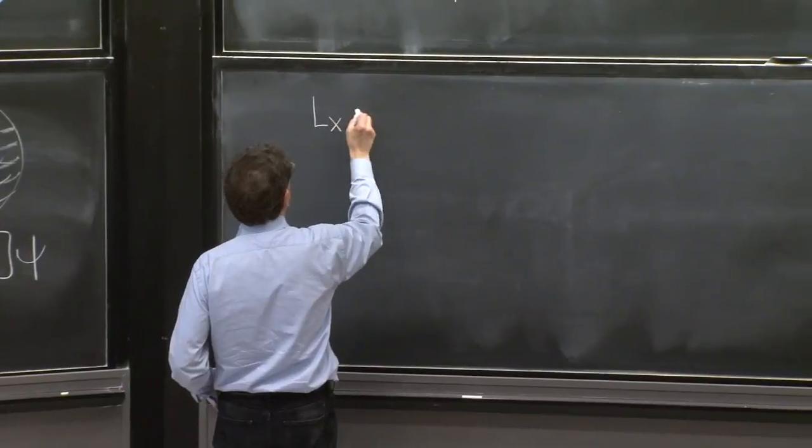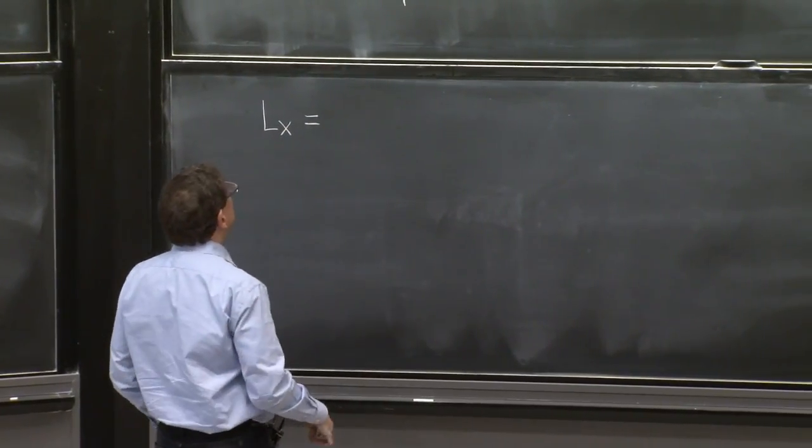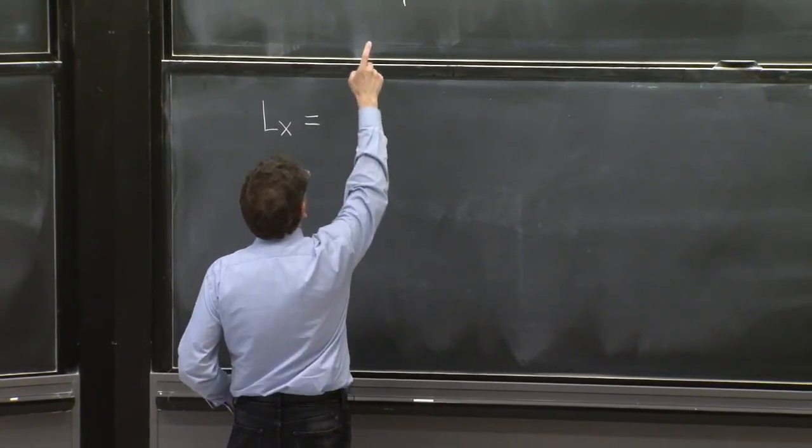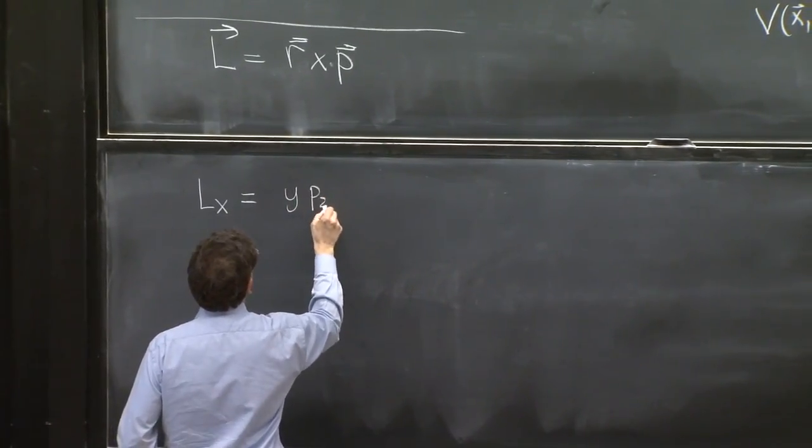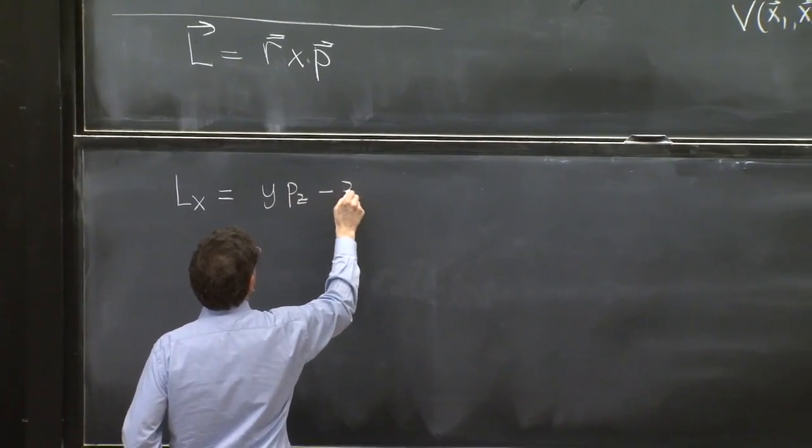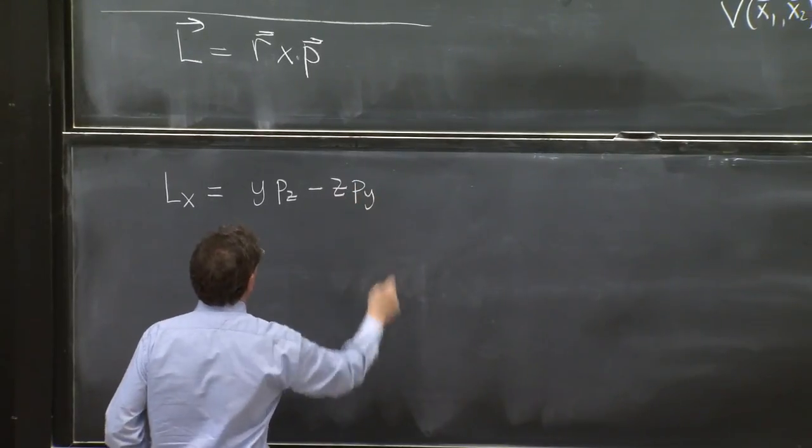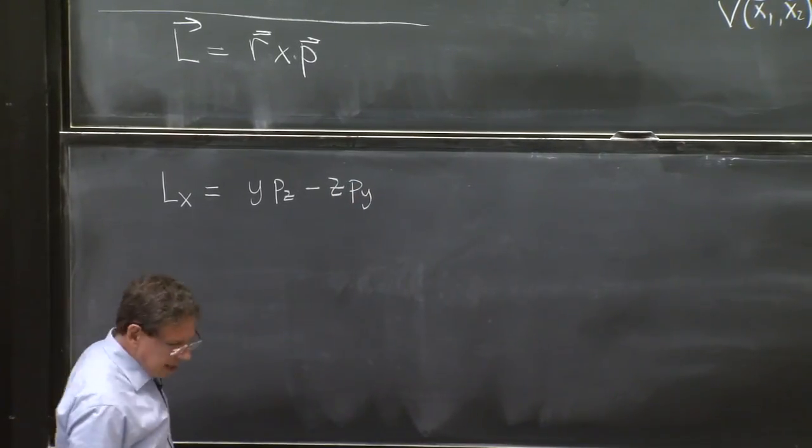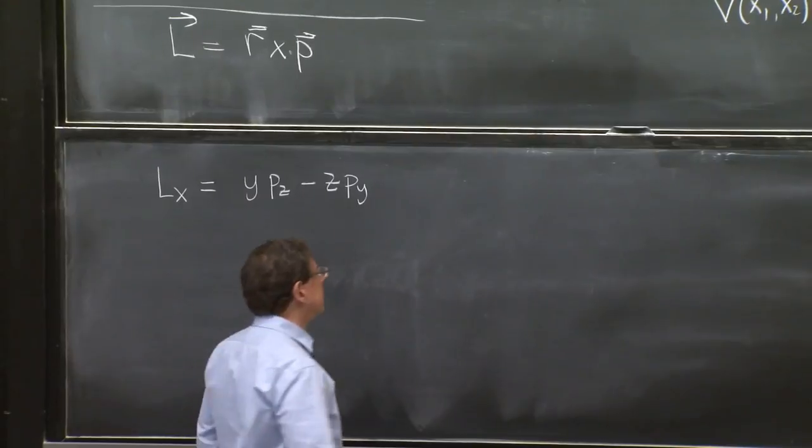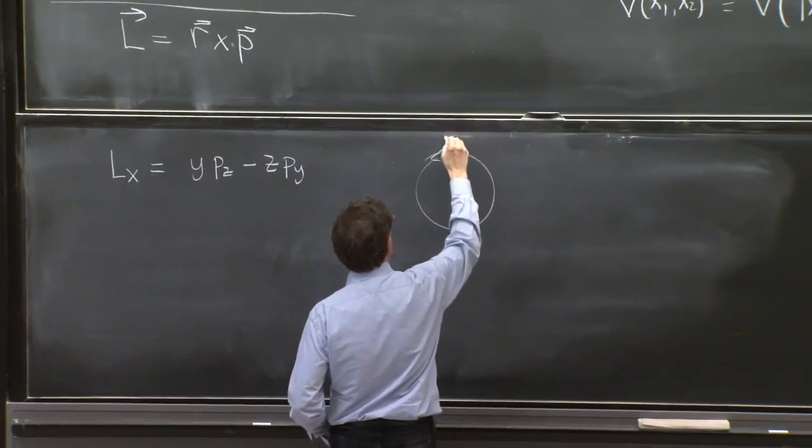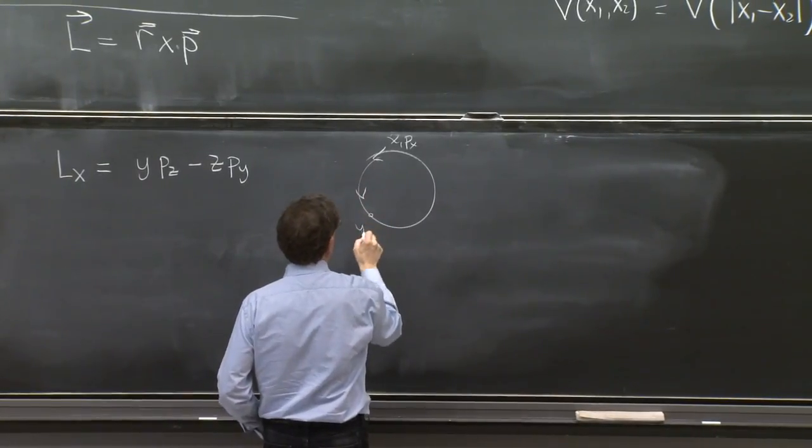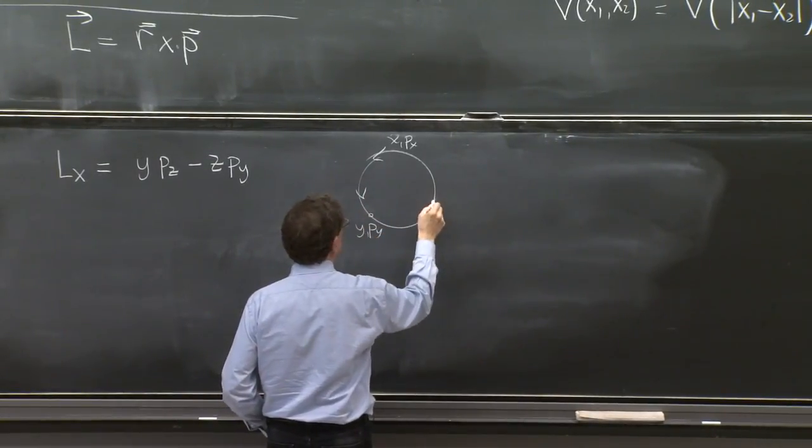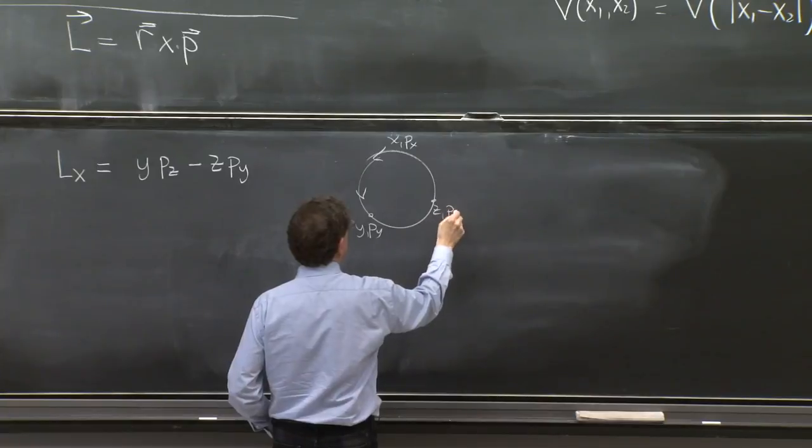Lx, if you remember the cross product rule, that would be y pz minus z py. Now, you can think of these things as cyclic, like a circle. You have x and px, y and py, and z and pz.